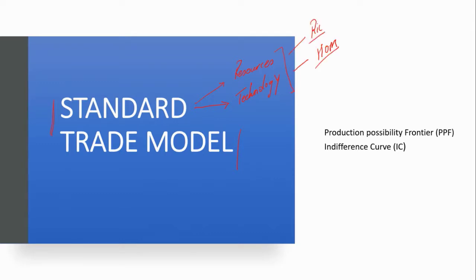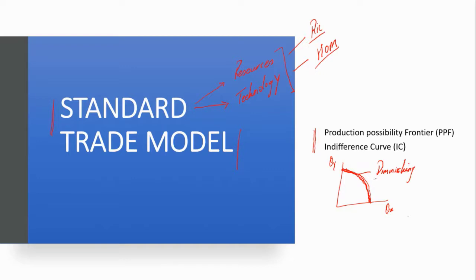What is the standard trade model? Well, we use the concepts from Econ 101: the production possibility frontier. It's curved, and the reason is because there are diminishing returns to factors of production — unlike the Ricardian model, which assumed constant returns to a factor of production. So we're going to use the concept of the production possibility frontier, and we're going to use the concept of the indifference curve.